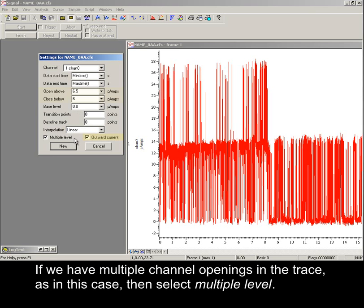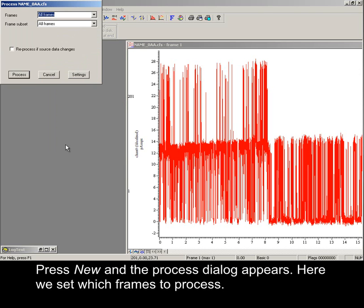If we have multiple channel openings in the trace, as in this case, then select multiple level. Press New, and the process dialog appears. Here we set which frames to process.